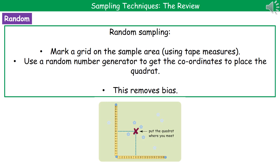Once we've collected our samples this way, we've only got data for a small area. If you did 10 quadrats that were half-meter squares, you've got a five-meter-square sample. The field you're sampling is probably much larger than that. So if they ask for the total population, you work out the number of organisms within your sample area and then multiply it up to match the total area.